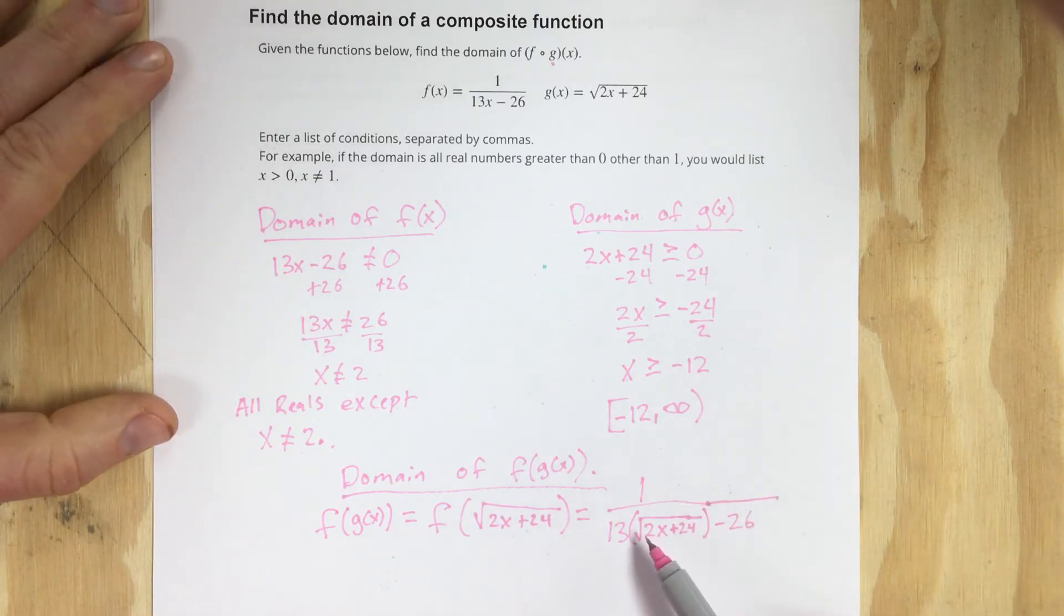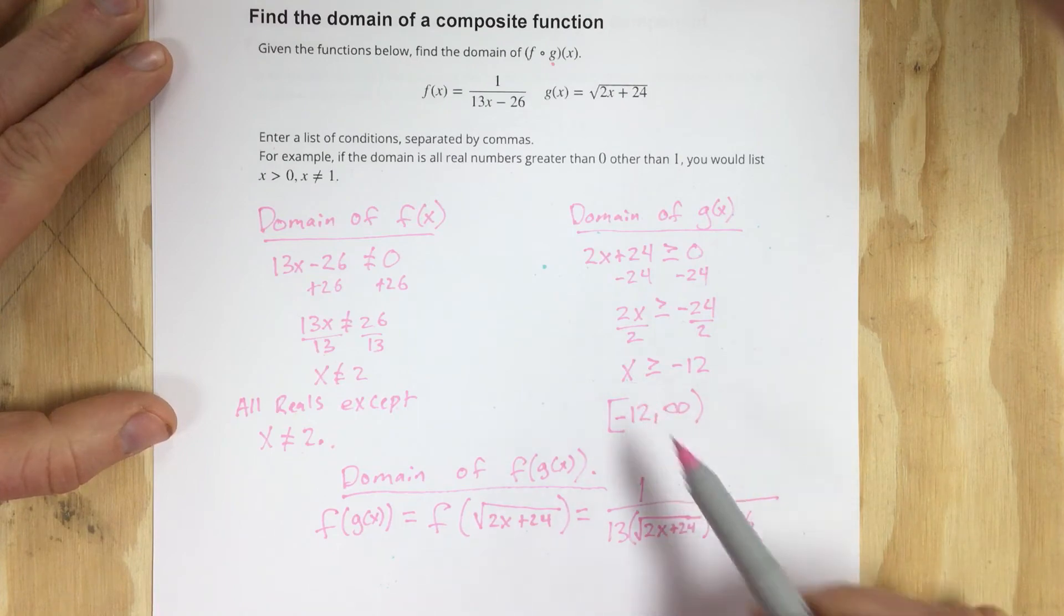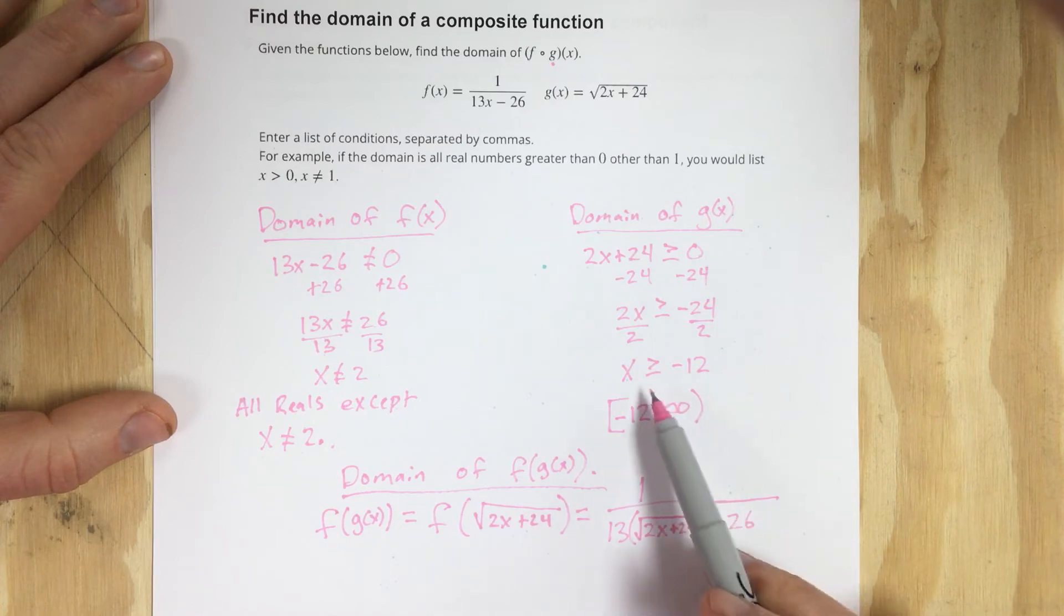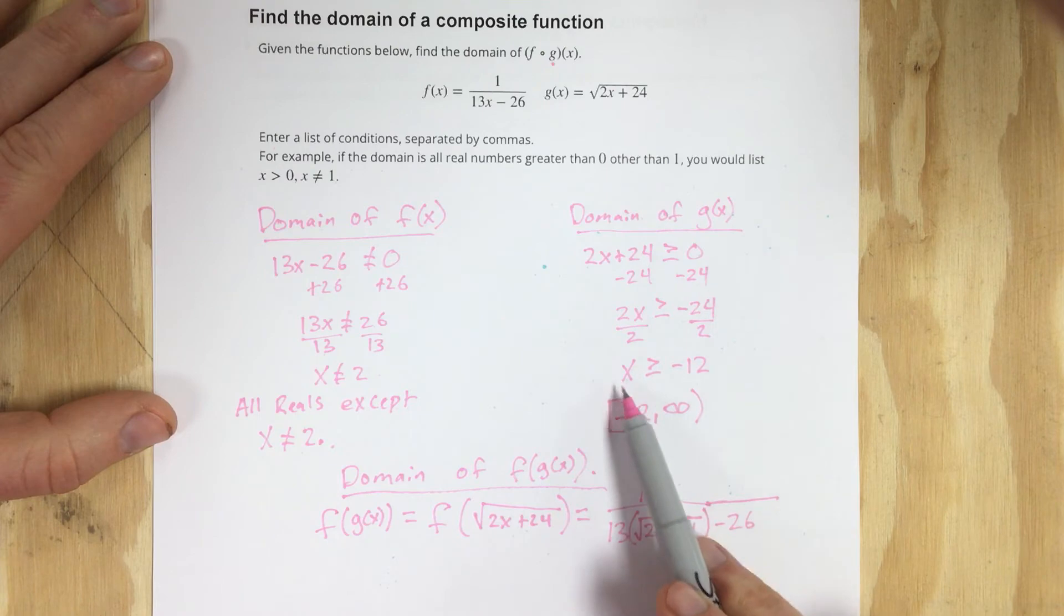First of all, for the domain of f of g of x, our domain has to at least be, because of this square root function, at least be greater than or equal to negative 12. So we know that this piece is going to play a part in our domain value.